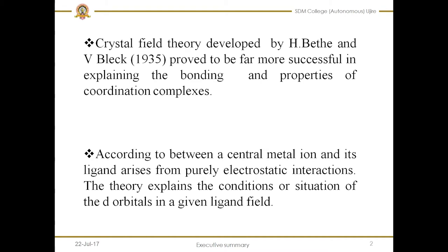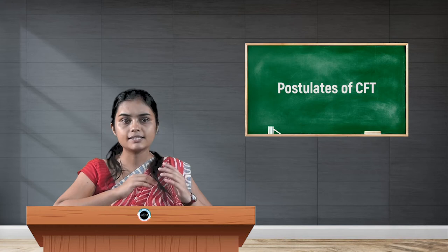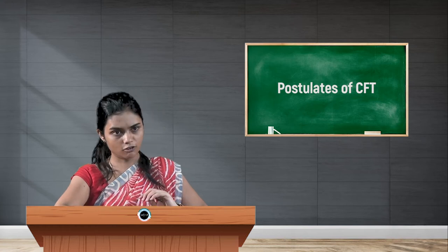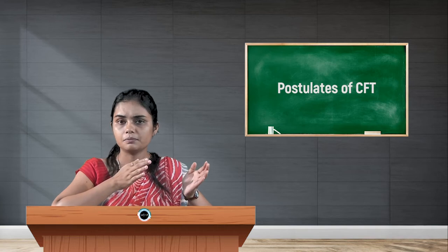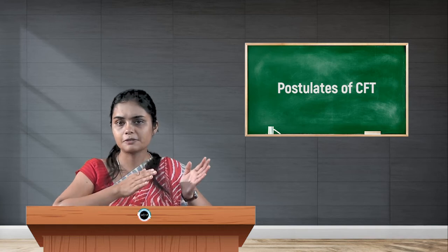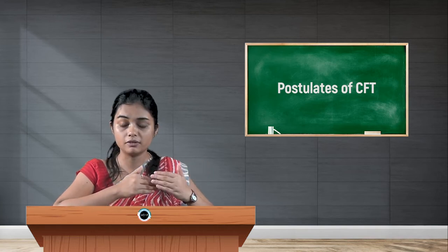According to this particular theory, the interaction between the central metal ion and ligand is purely electrostatic. The theory explains the condition and situation of the orbitals in a given ligand field. This theory successfully explains the drawbacks and limitations of VBT.